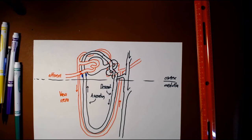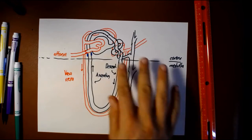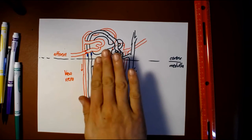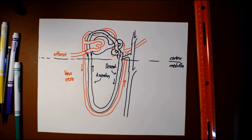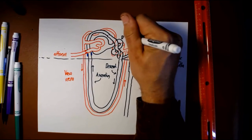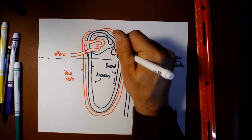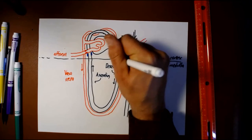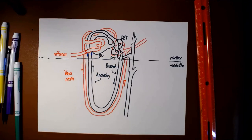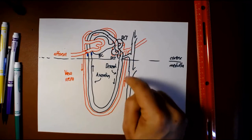So I think that covers the layout of the nephron. You should practice drawing those and labeling things like the proximal convoluted tubule, the distal convoluted tubule, the Bowman's capsule, the glomerulus, peritubular capillaries, collecting duct, and all of that.